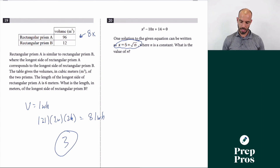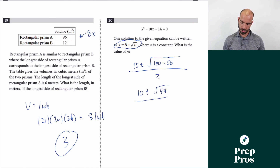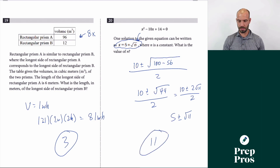Number 20: we need to use the quadratic formula because of the 5 + √n form. Applying the quadratic formula: (10 ± √(100 − 4·1·14)) / 2 = (10 ± √44) / 2. Since √44 = 2√11, this simplifies to 5 ± √11. Therefore n = 11.